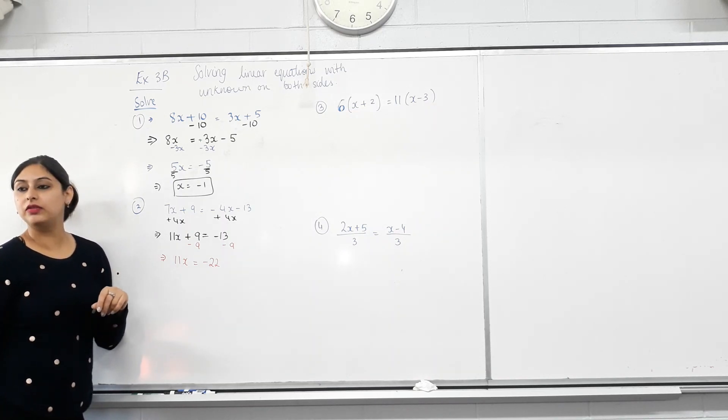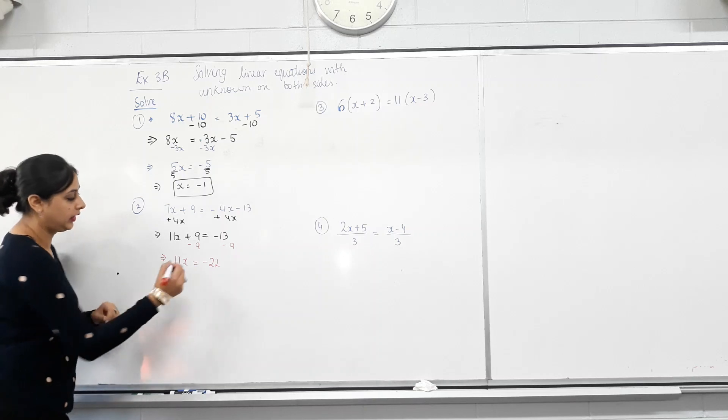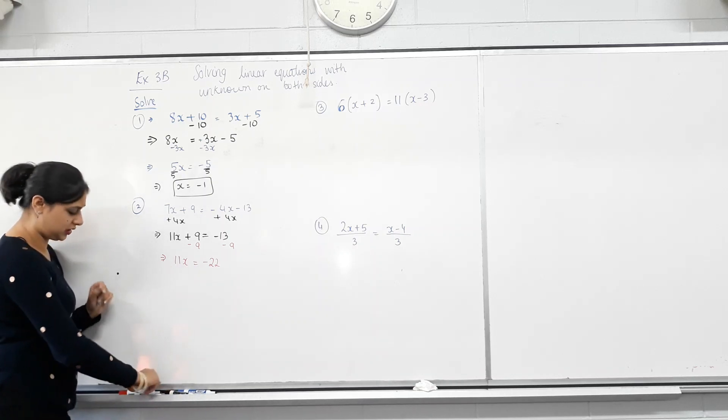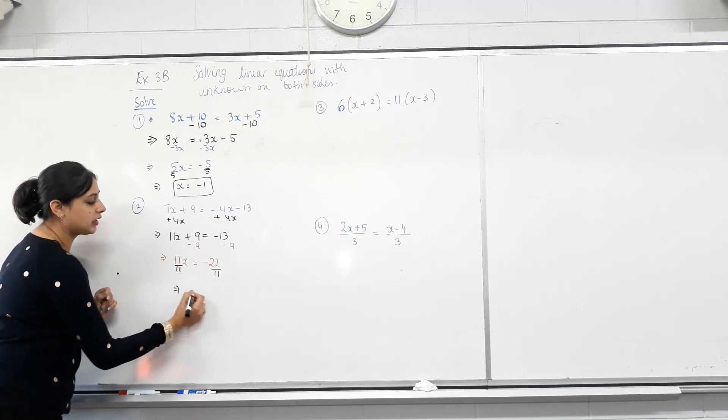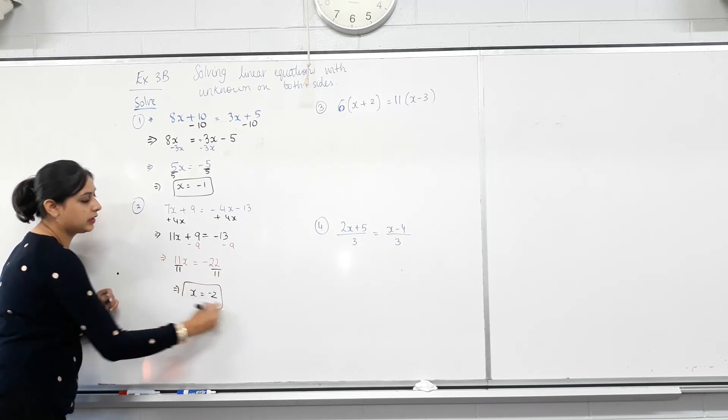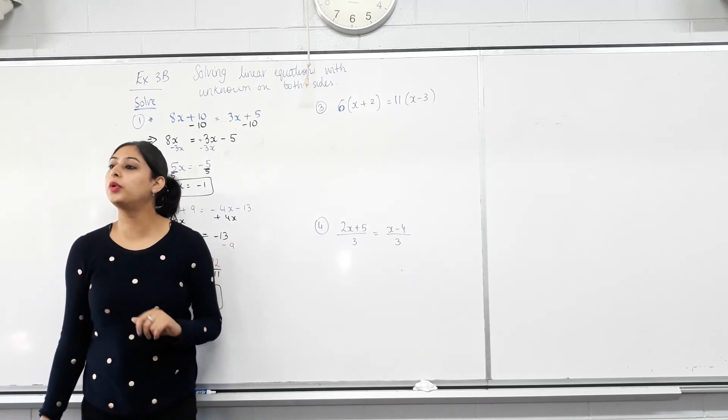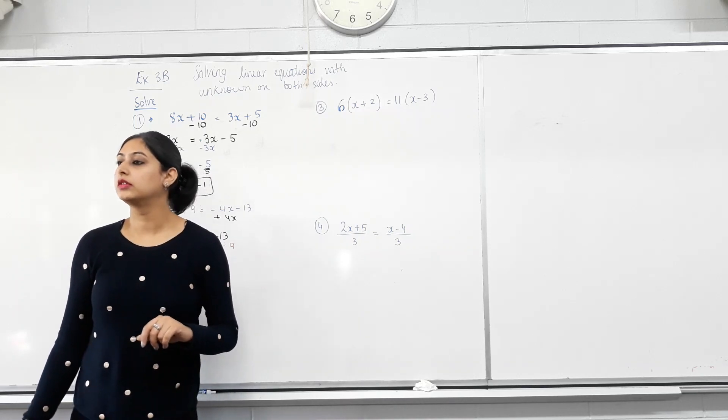11x. How do I get rid of the 11? Divide. You guys are so smart. I don't even need to teach you anymore. X equals negative 2. That's it. Well done. Eyes on board. No talking when I'm talking. Sitting straight.